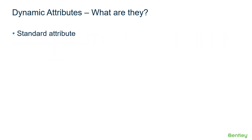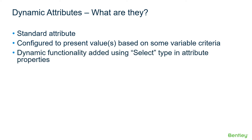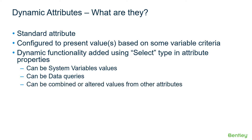In ProjectWise Administrator, you will create just a standard attribute — there is no option to create a Dynamic Attribute specifically. That standard attribute is configured to present values based on variable criteria using the select type and attribute properties. The variable criteria can be system variable values, data queries to lookup tables created earlier in this course, and combined or altered values from other attributes.